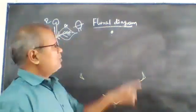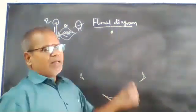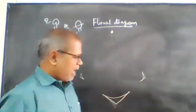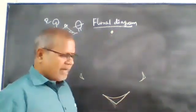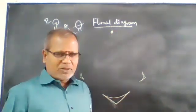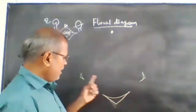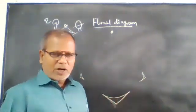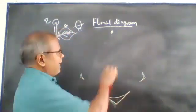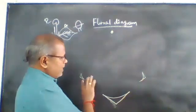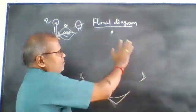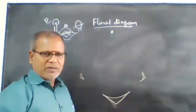In the posterior side, the mother axis is drawn. In the anterior side, the bract is drawn. In the lateral side, the bracteoles are drawn. And in between the mother axis, bract, and bracteoles, the floral leaves are drawn.